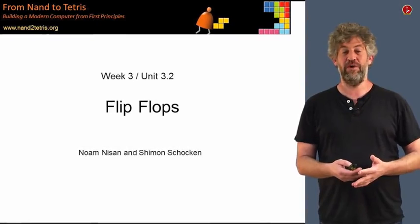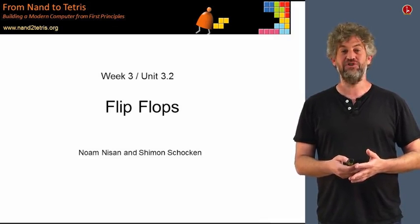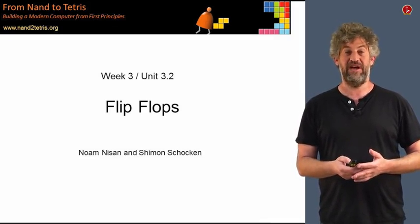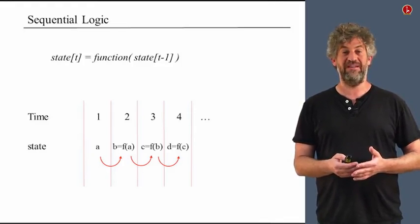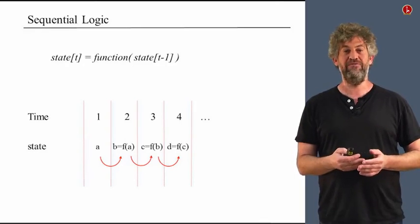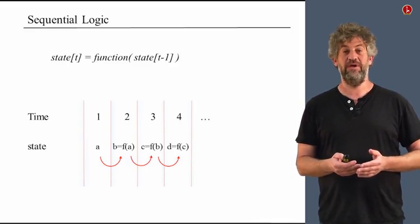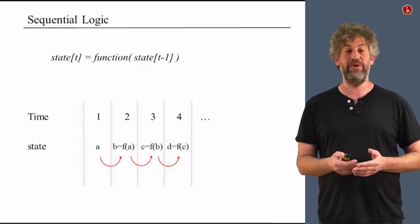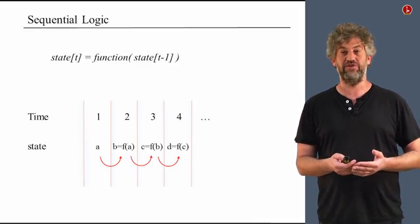In our previous unit, we discussed how we deal with time and sequential logic in computing systems. In this unit, we'll talk about the actual elements, the chips that provide this functionality. Recall how we started the last unit: we have integer time units, and at every time unit t, we want to compute some function whose output depends on the value at the previous time unit, t minus 1. So what kind of element do we need to provide such functionality?